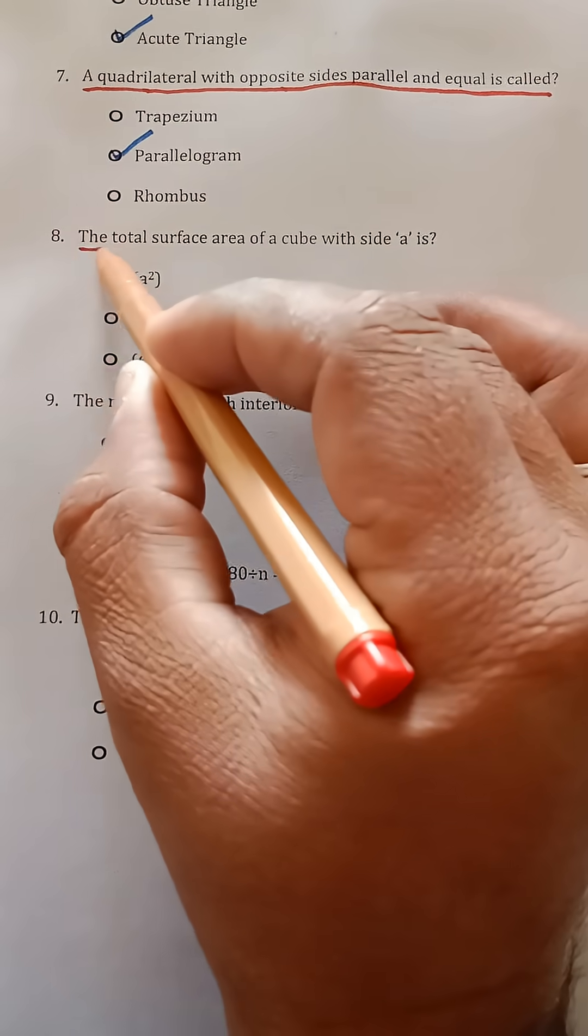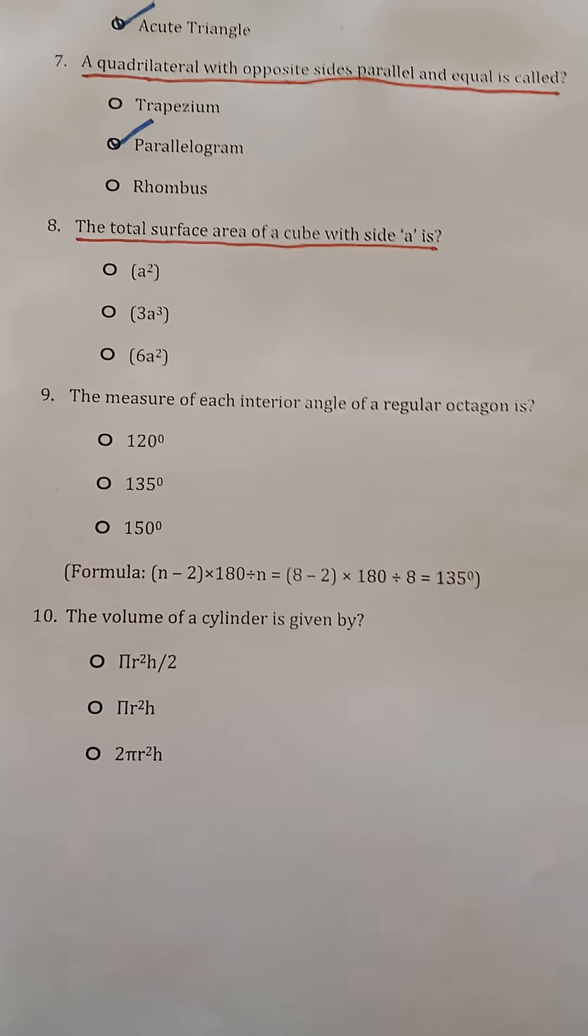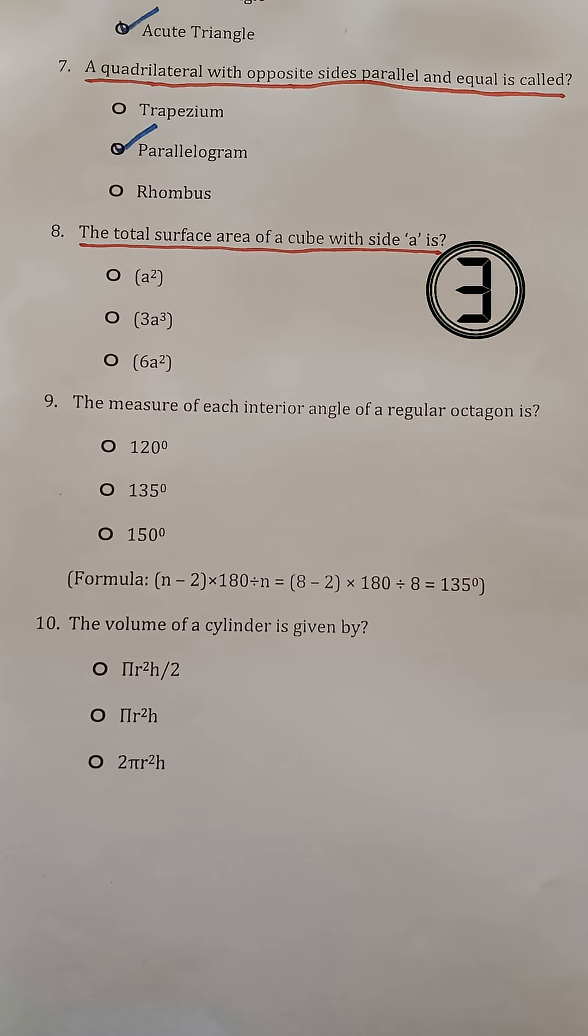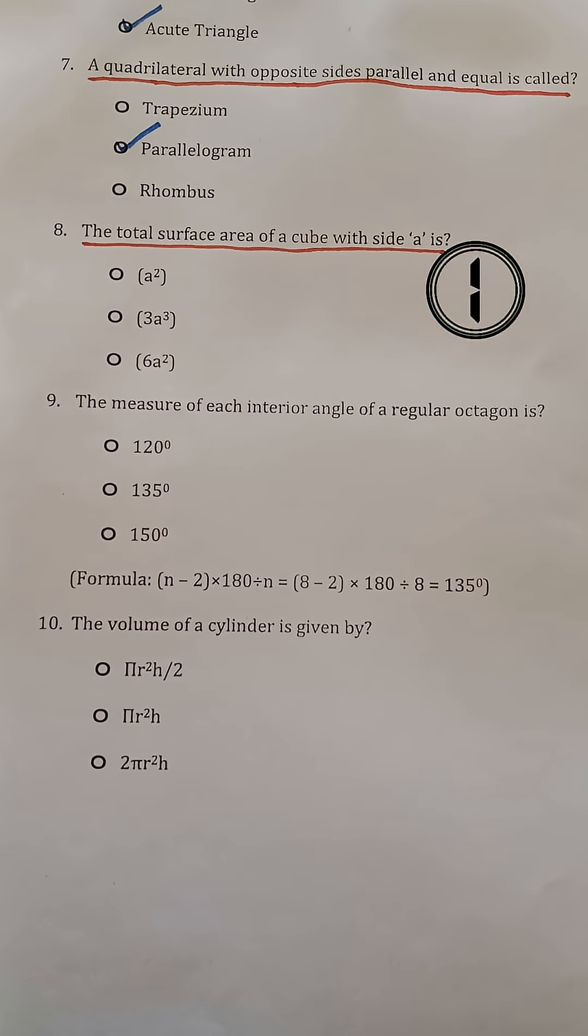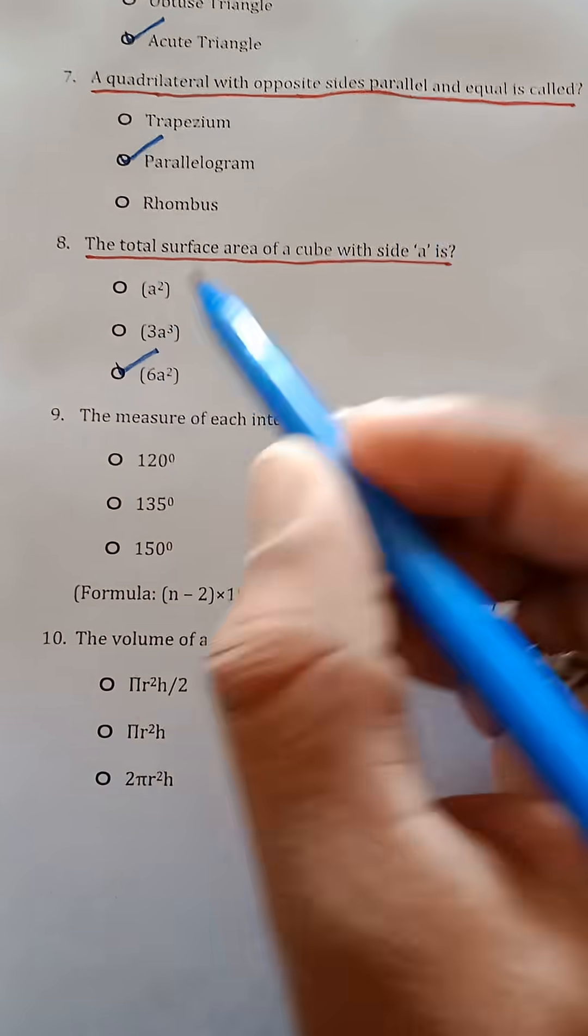Question 8. The total surface area of a cube with side 'a' is? 6a².